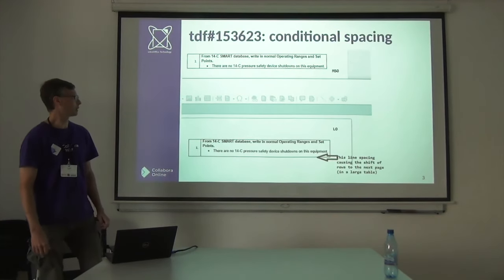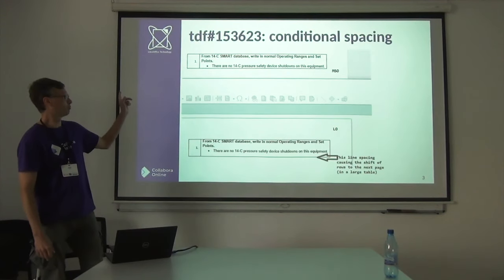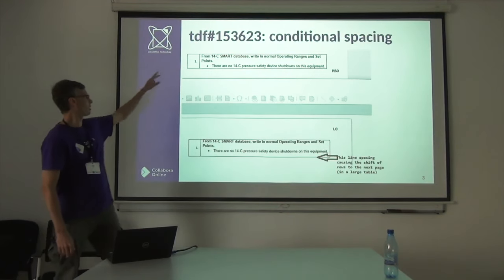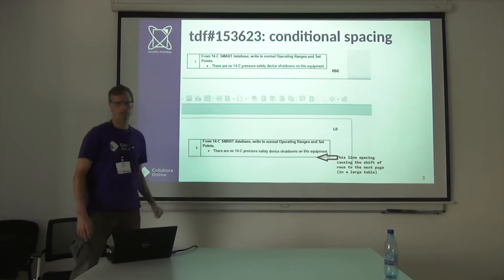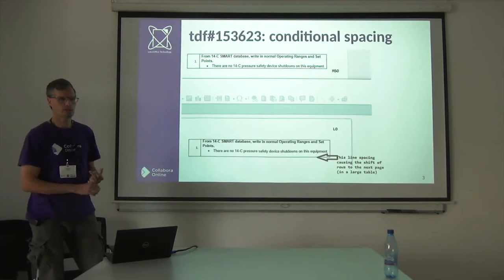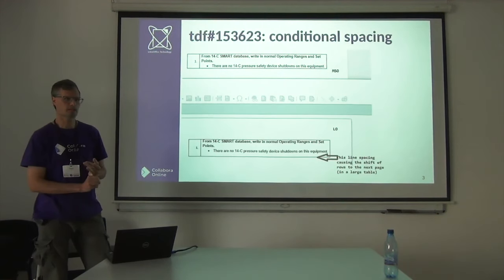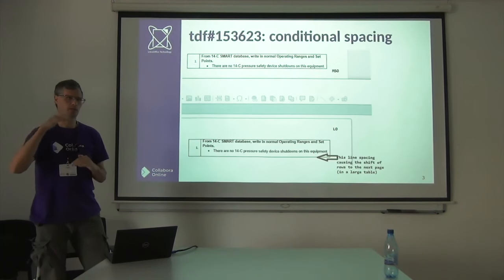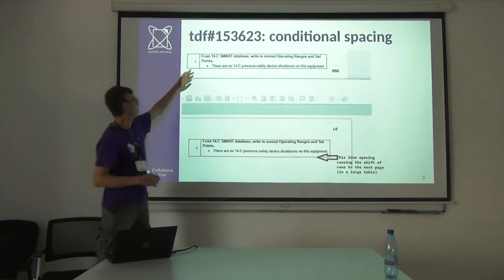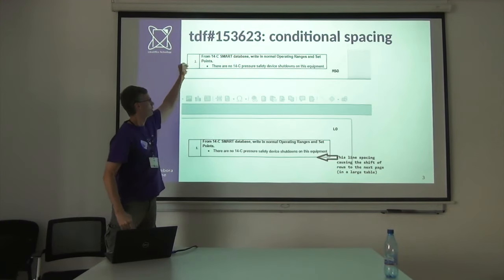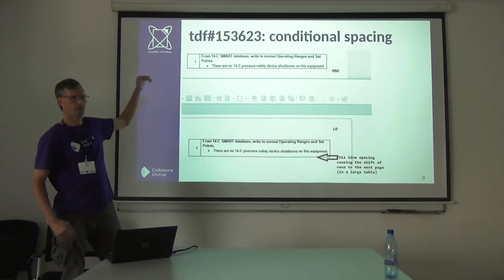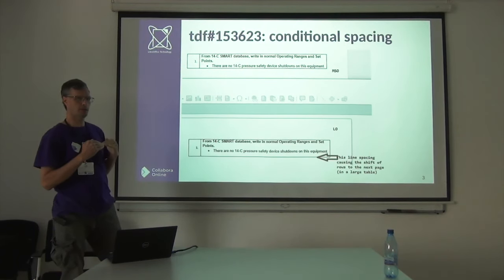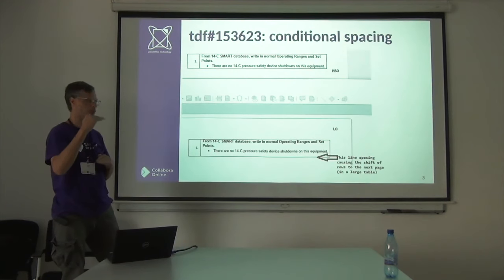In the example I'm going to use today, at the top we have Microsoft Office, and you see a cell with no space on the bottom, but in LibreOffice there's an extra space on the bottom. One of the things you can do in Microsoft format is a conditional style — or conditional formatting — for upper and lower space. If you have multiple paragraphs with the same style, it will not put the space in between, but when you switch styles, the space will go there.